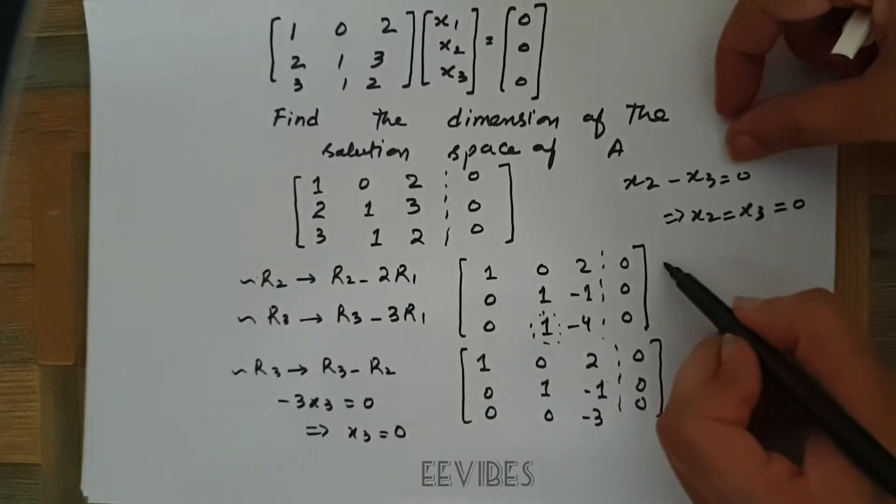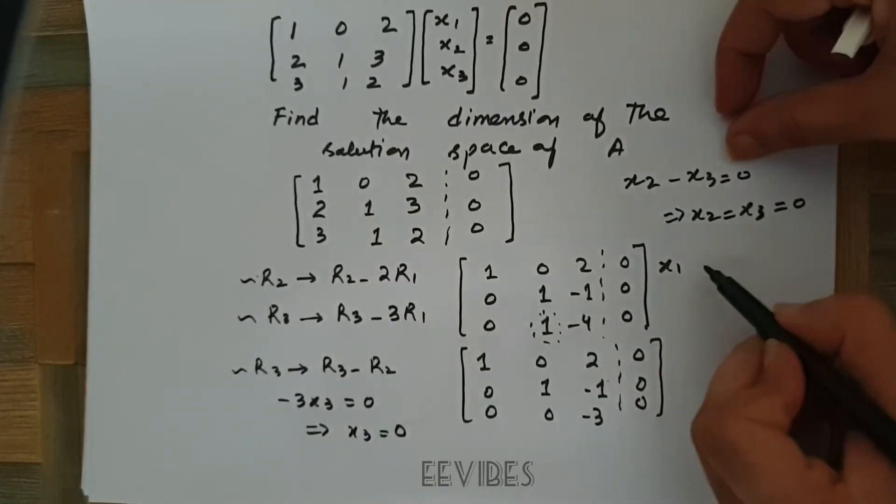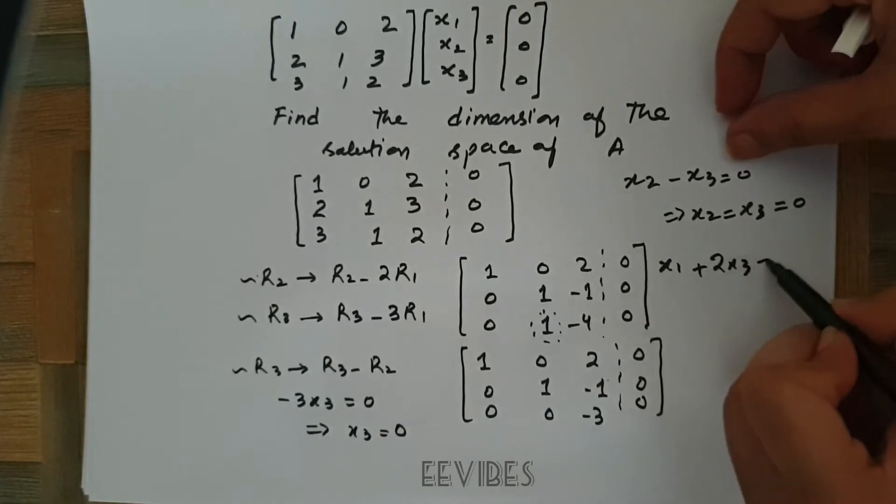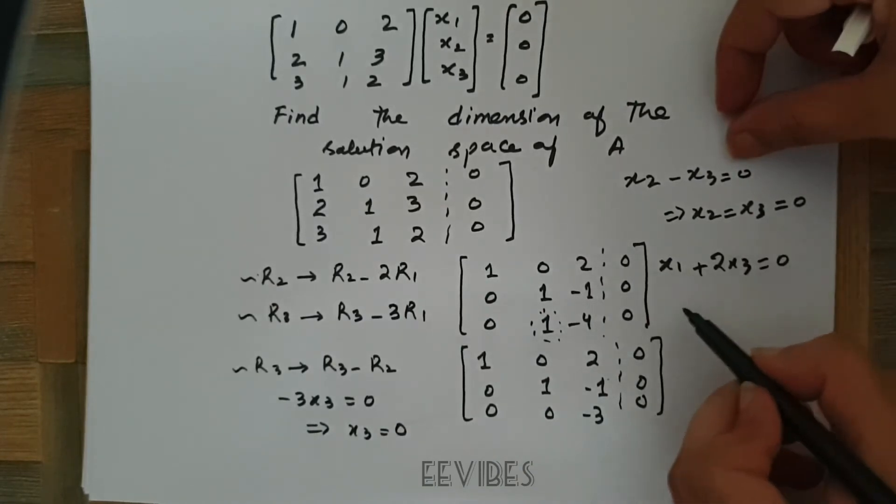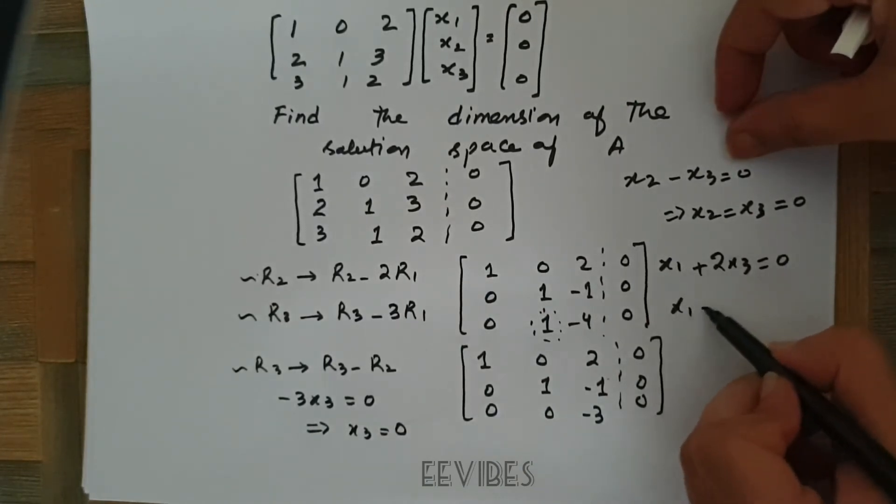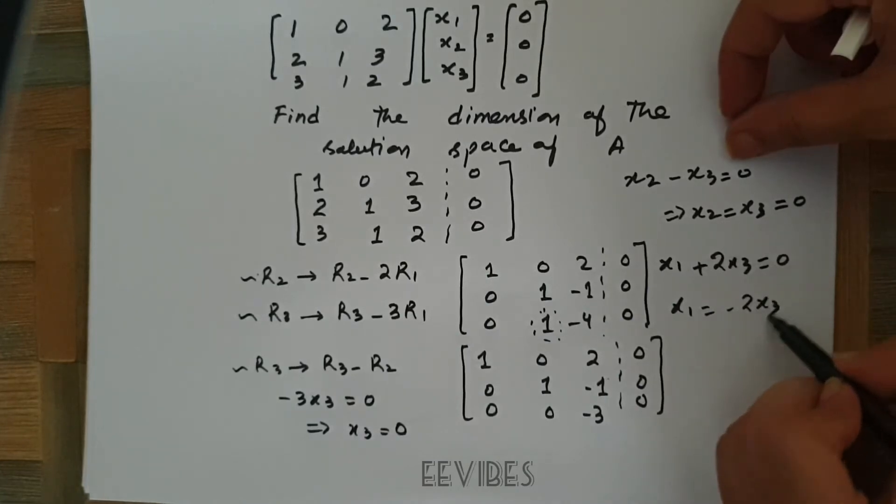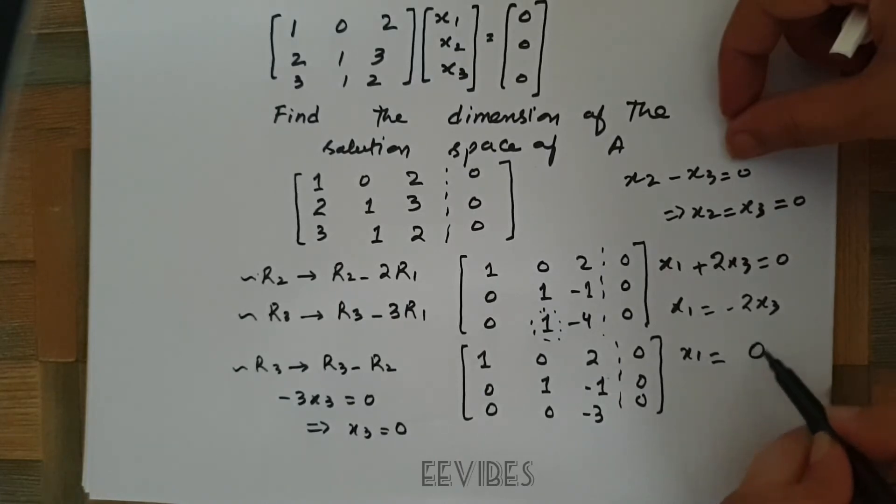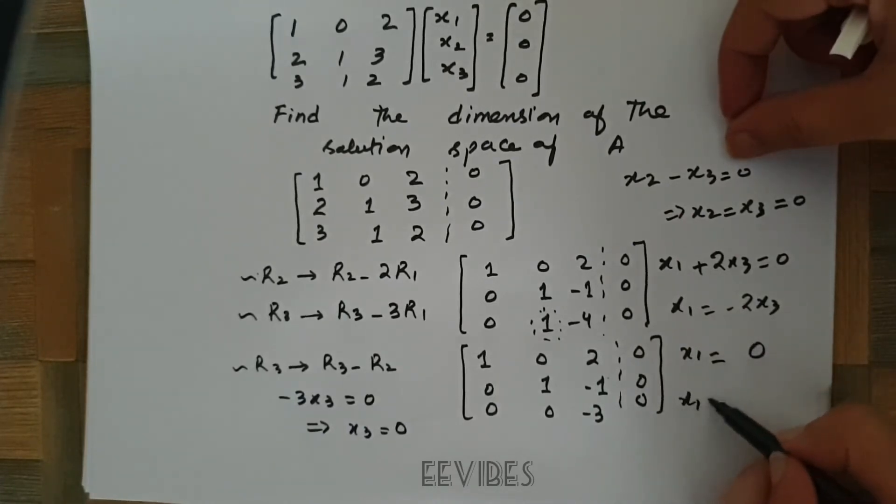And from the back substitution, I will have x1 plus 2x3 is equal to 0. This will result in x1 is equal to minus 2 times x3, and x1 is equal to 0. Since x3 is equal to 0, obviously no matter what you are multiplying with the constant 0, the resultant will be equal to 0.